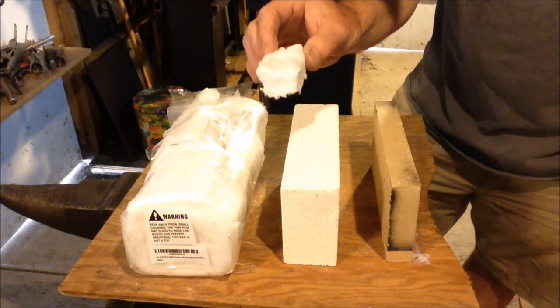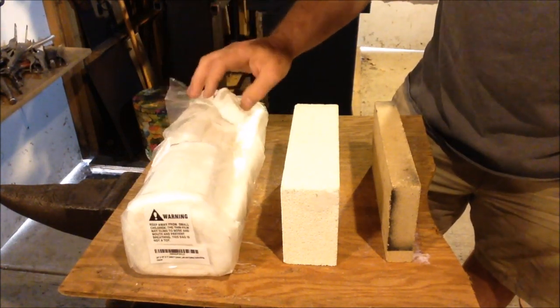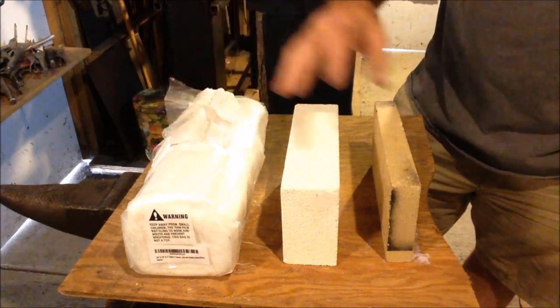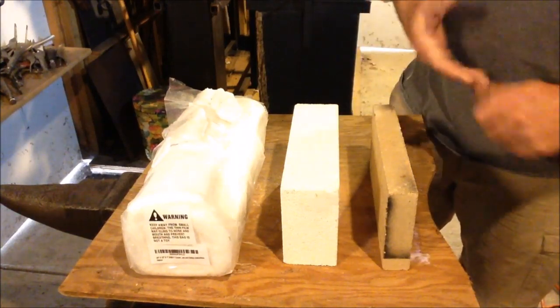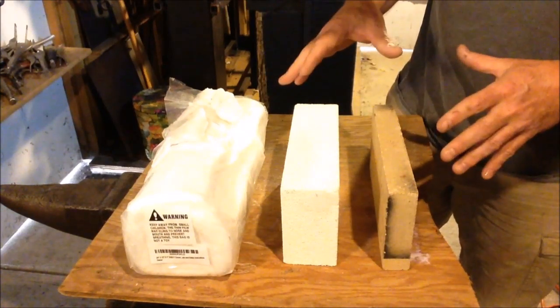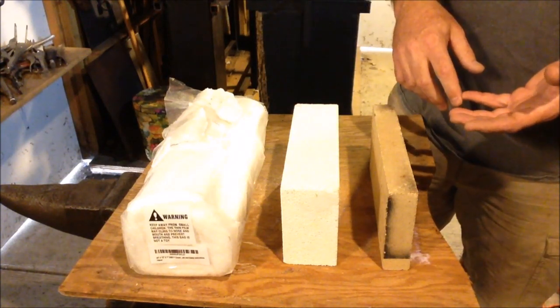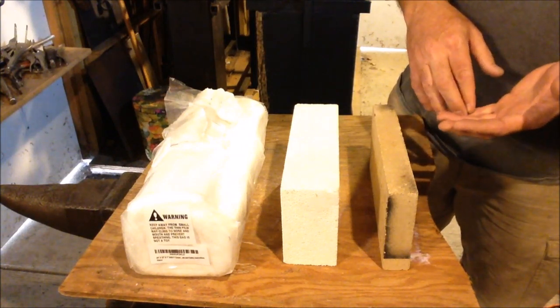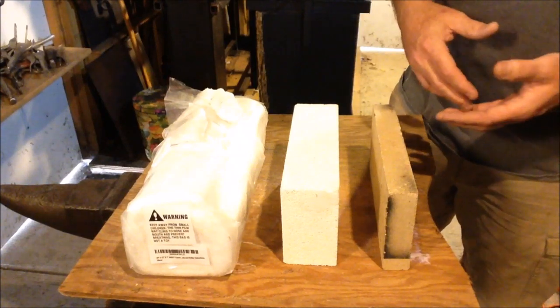Now what's not included in the price of this ceramic blanket is the cost for the coating. You have to coat these when you put them in your forge. This ceramic fiber, once it's heated, can quickly deteriorate and give off dust particles. Ceramic fiber dust particles, which are very hazardous to your health. They're actually a carcinogen. So you have to coat these.